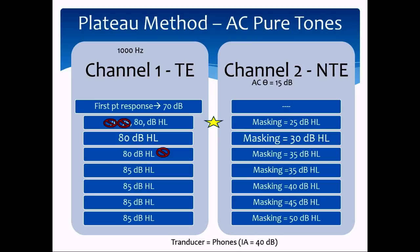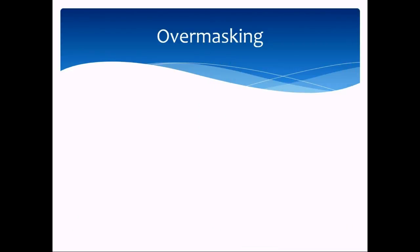However, the plateau method can get tedious. For example: masking starts at 25, patient gets 80 dB with masking at 25. Increase masking to 30 — positive response at 80. Increase masking to 35 — no response at 80. Now you have to keep going: test at 85, they respond. You now need three consecutive stable responses from masking level 35 onward. So test at masking 40, then 45, then 50 — checking the threshold each time. That's the plateau method — it tends to have more steps.